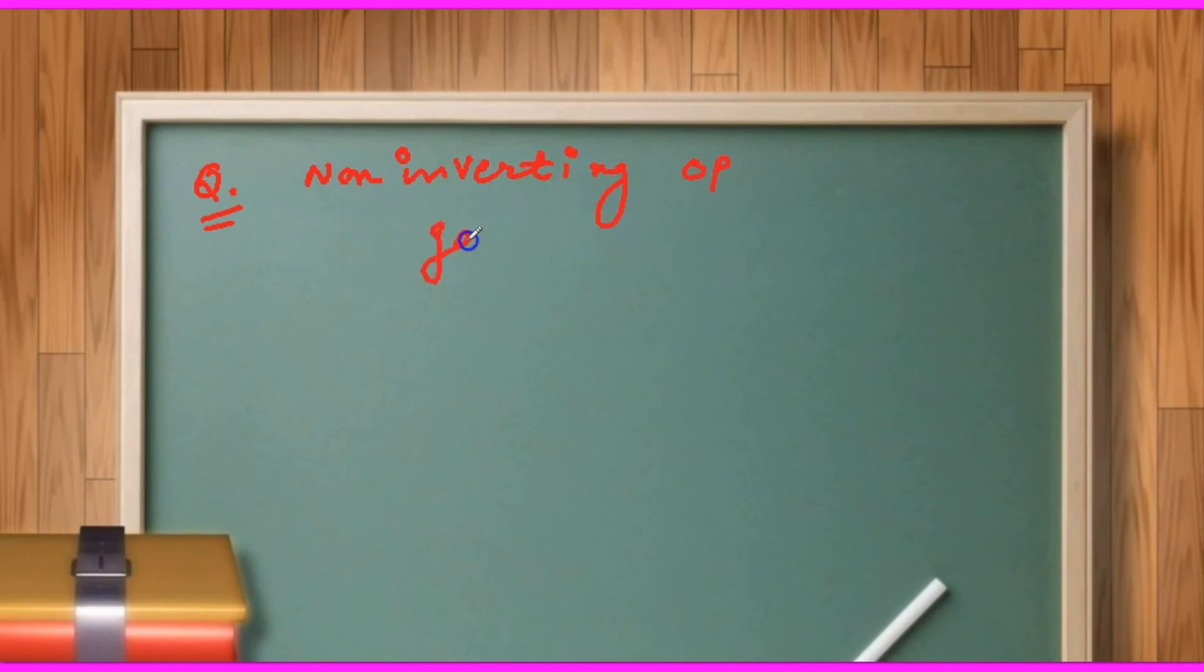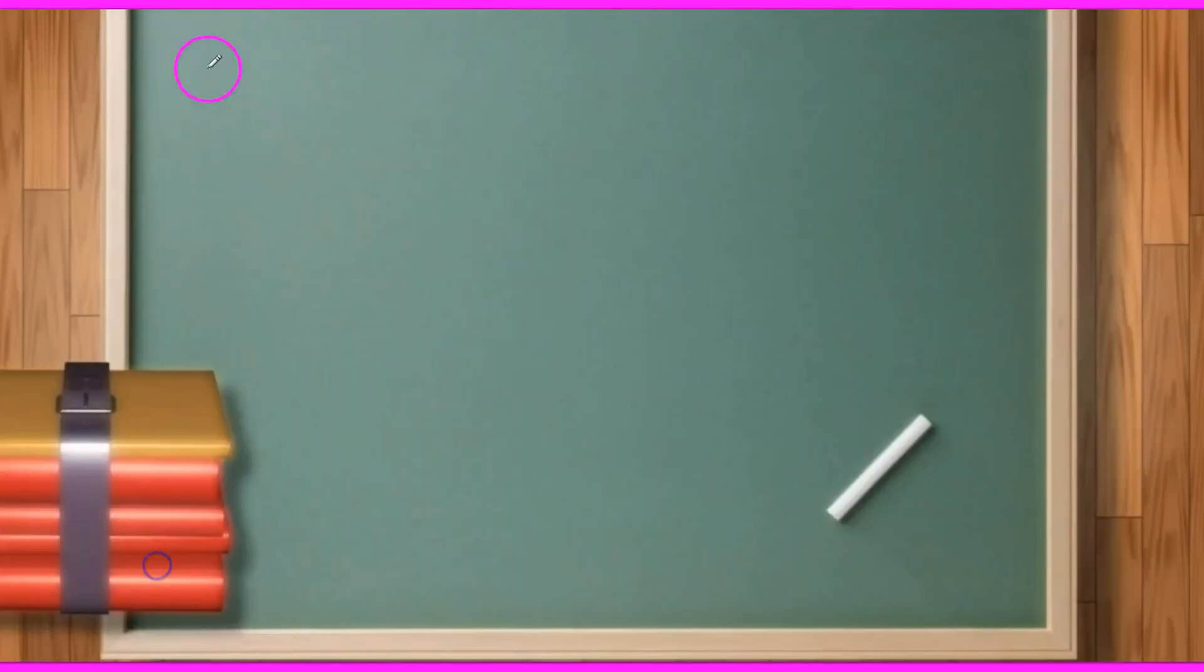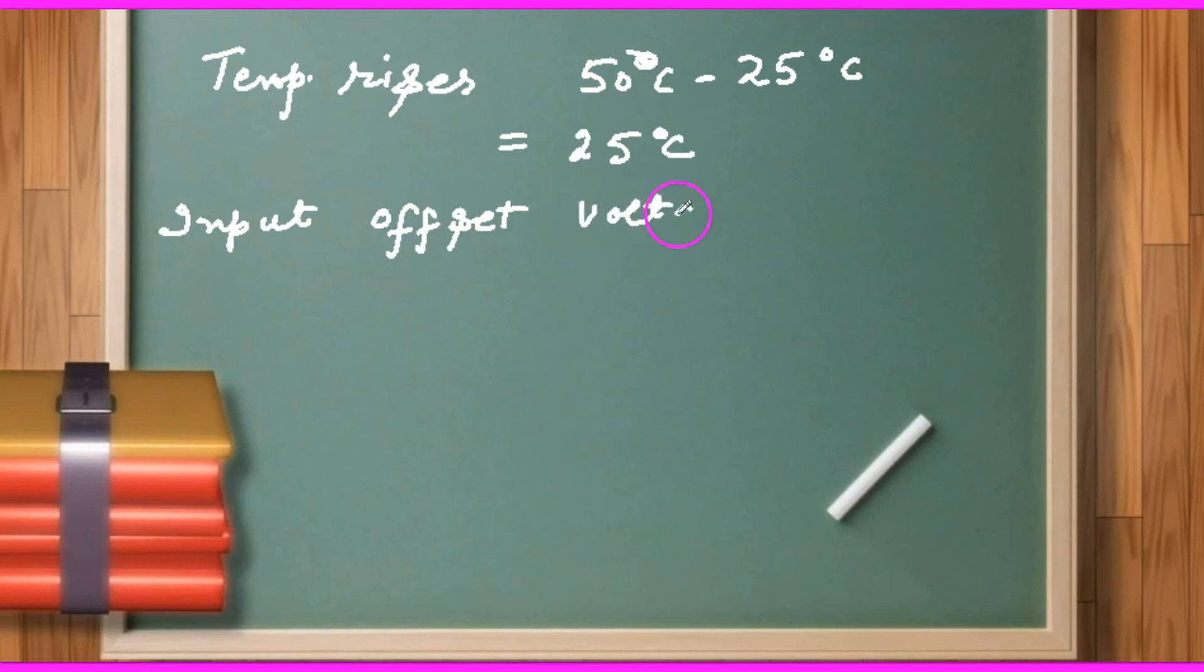There is an example just to understand the thermal drift. Let the gain of the non-inverting operational amplifier is 100, and it is nulled at 25 degrees Celsius, meaning it is not having any offset voltage at 25 degrees Celsius. But what will happen to the output if the temperature rises to 50 degrees Celsius? Temperature rises by 25 to 50, that means the shift is 25 degrees Celsius.